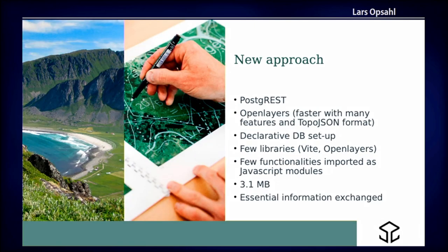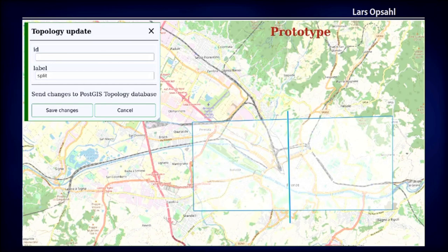Now it comes to the solution we have today. A few months ago, Lars decided to explore more of the potential of PostGIS, and we decided to use that for the back end. We use plain JavaScript for the client with only two libraries — one for bundling the code and one for map and interaction functionalities. The important thing is that we now have a generic client with a declarative database setup. The client is very small: 3.1 megabytes. The common point with the old approach is we use topology and only essential information is exchanged between client and server.